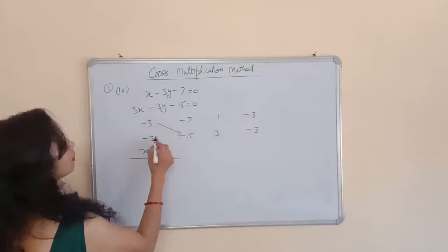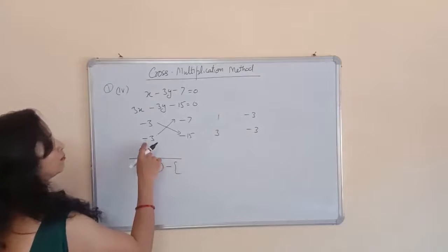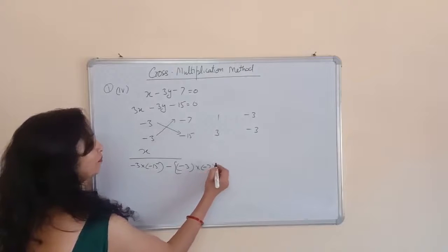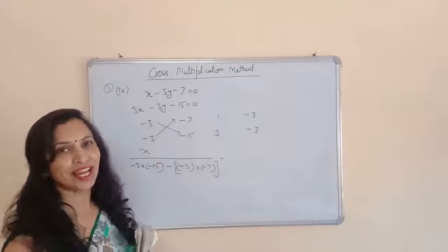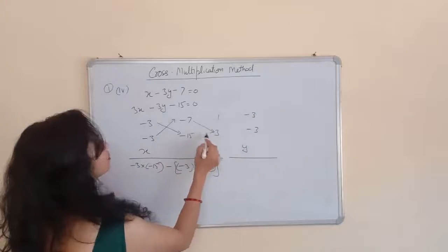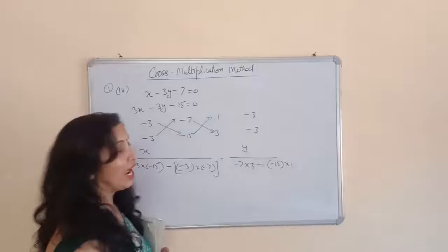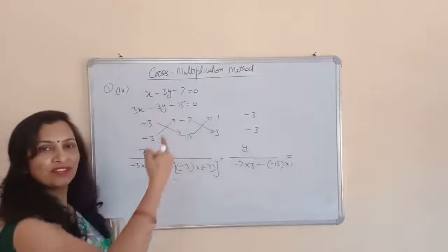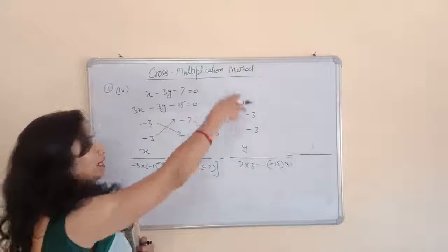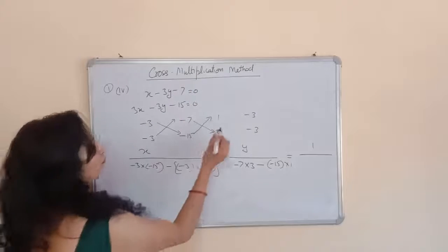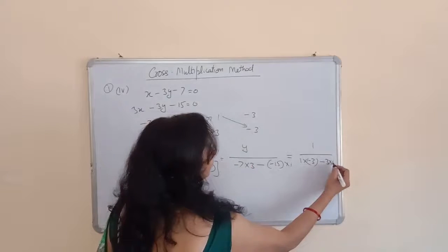Then x upon this into this minus this into this — that is (-3)×(-15) minus (-3)×(-7). And y upon this into this minus this into this — that is (-7)×3 minus (-15)×1. Since the constants c1 and c2 are towards the LHS, we write 1 upon. So 1 upon 1×(-3) minus 3×(-3). There is no need to learn anything — just write the coefficients and apply the formula.